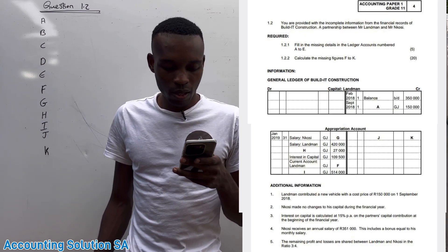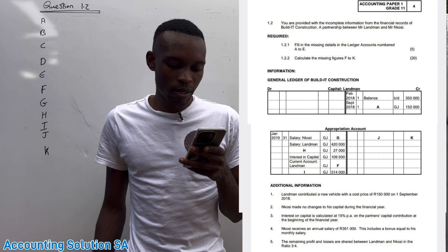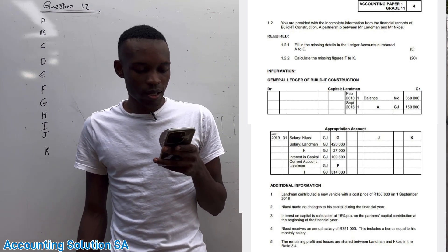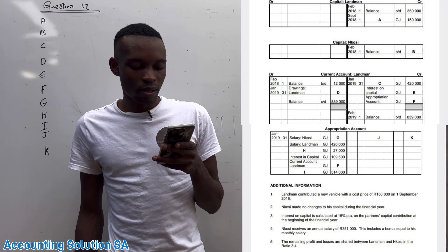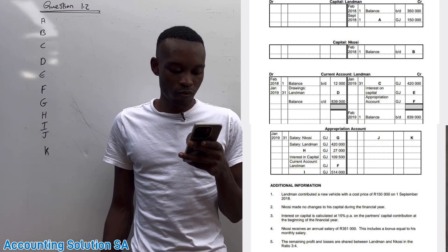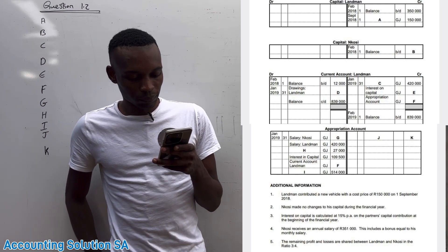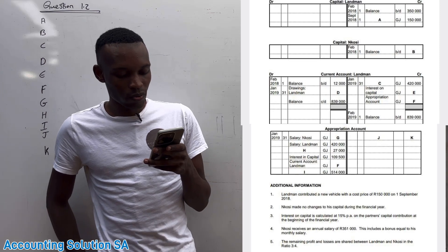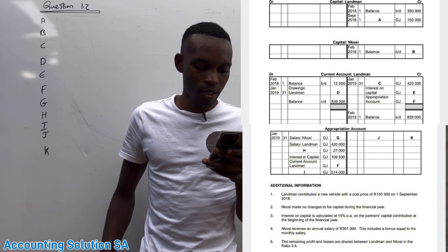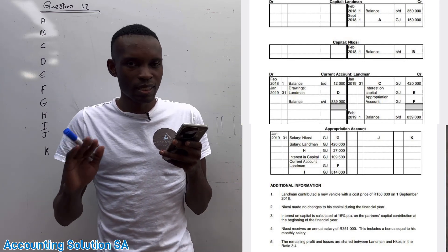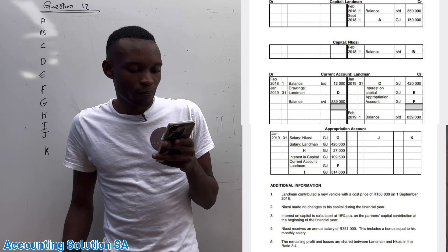The information is from the general ledger of Bold Eat Construction, a business owned by Mr. Landman and Mr. Nkosi. They give us a capital balance of 350,000 for Landman and a balance of 150,000. Then they give us the capital account for Nkosi with no opening amount. Next they give us the current account for Landman - we don't have a current account for Nkosi. Then they give us the appropriation account with some figures we need to calculate.